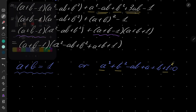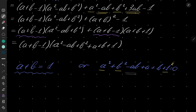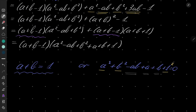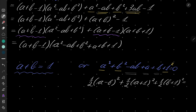Moreover, here I have minus ab, here I have a times 1, and here I have b times 1. So all of that can be written as one half times a minus b squared, plus one half times a plus 1 squared, plus one half times b plus 1 squared, equals 0. That is the identity which I hinted at at the beginning, and you can easily verify that this is in fact true.